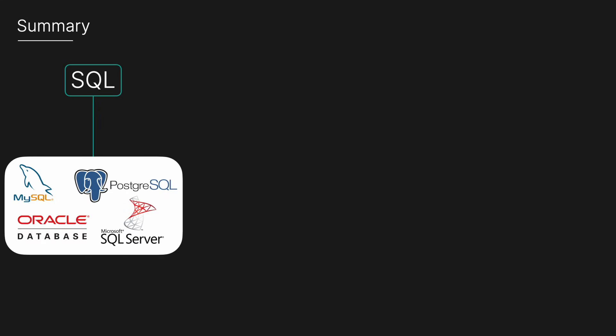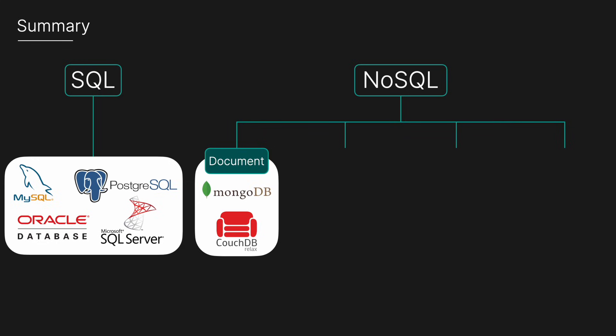To summarize: SQL is designed to handle structured data that fits into tables with rows and columns, with popular examples including MySQL, PostgreSQL, Oracle Database, and Microsoft SQL Server. NoSQL handles unstructured or semi-structured data and is designed for flexible schemas, high performance, and scalability. The four main categories include document stores, which store data as documents — often JSON — each with its own structure, with examples like MongoDB and CouchDB.